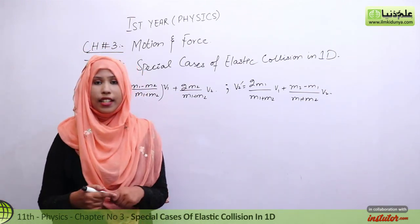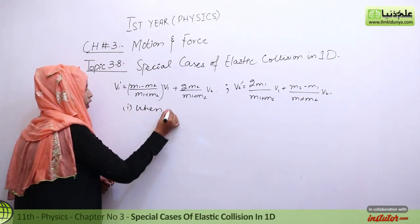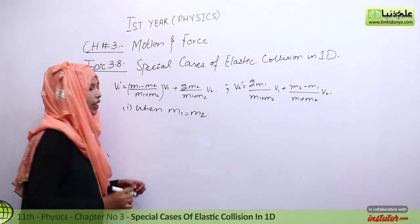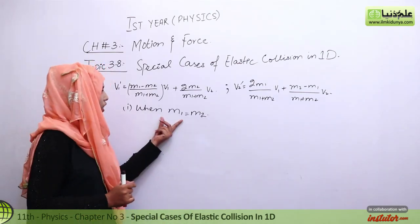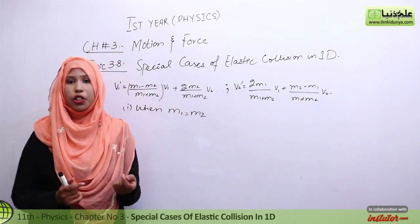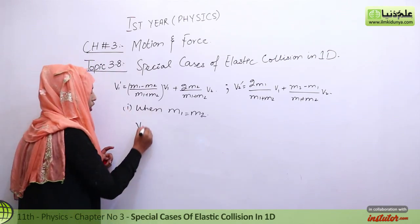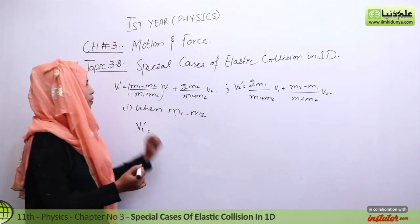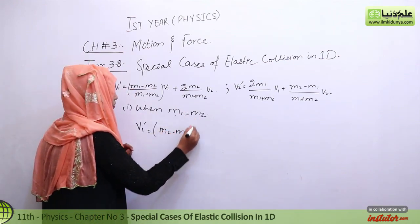The first case is when m1 is equal to m2 — that means mass 1 and mass 2 are equal. If this condition holds, what will the values of v1' and v2' be? Let's start from v1'. Since m1 and m2 are equal, we can substitute m2 in place of m1 in our equation.